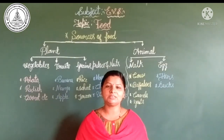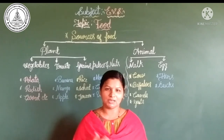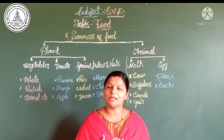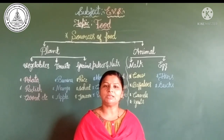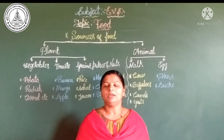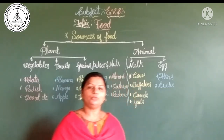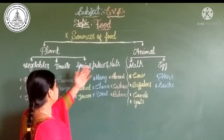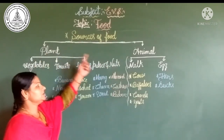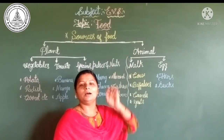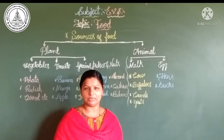Because food gives strength and energy to us, and it builds our body and keeps our health good. That's why we need food. So what are the sources of food, children? How do we get food? We get food from two sources, children. The first source is plants and the second one is animals. Plants and animals are the sources of food.